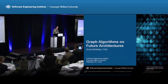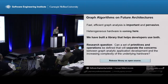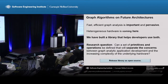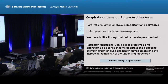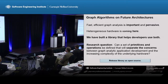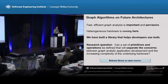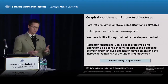My name is Scott McMillan, and I'm with the Emerging Technology Center. The bottom line up front: fast and efficient graph analytics is important and pervasive. At the same time, heterogeneous hardware — very complicated to program — is already here. We have built a library that helps developers use both.